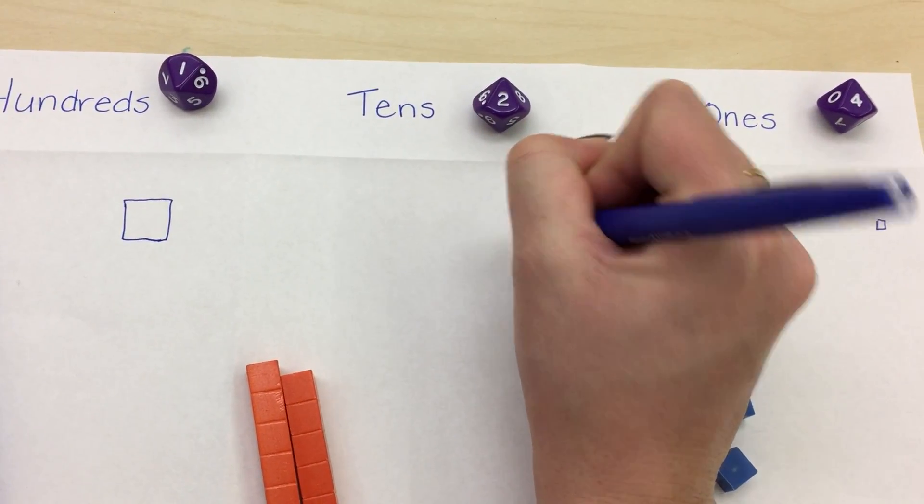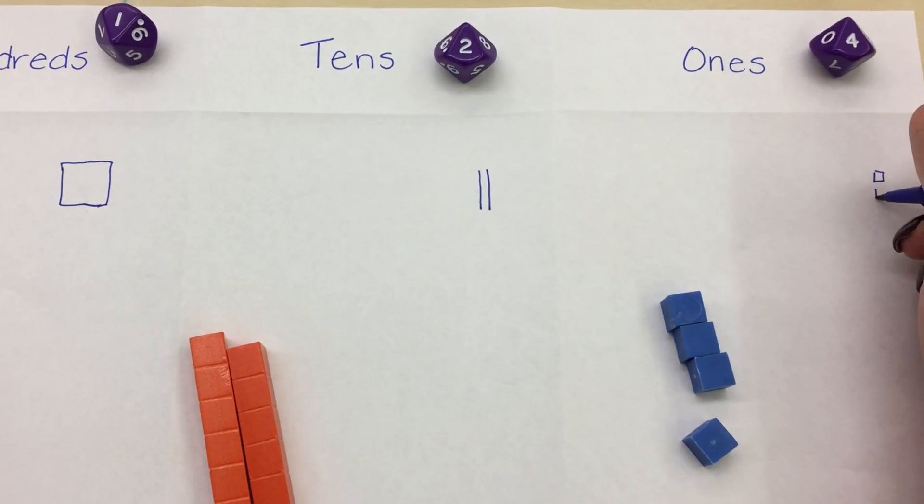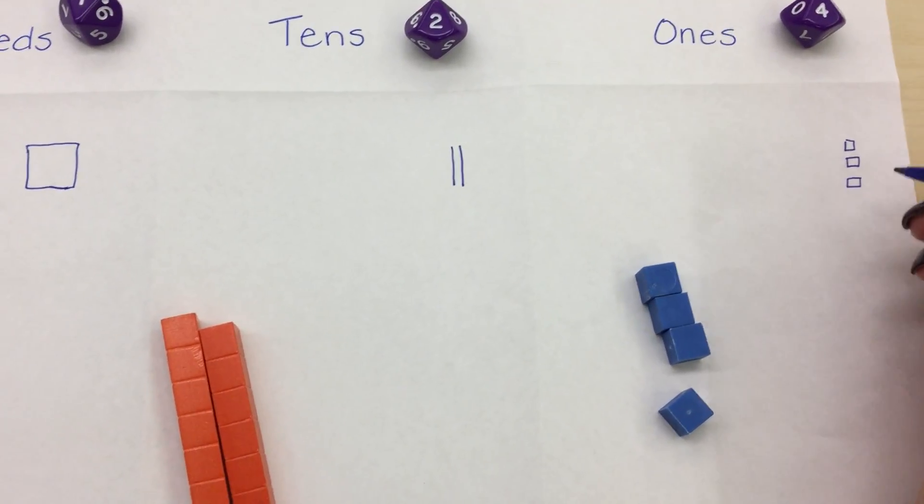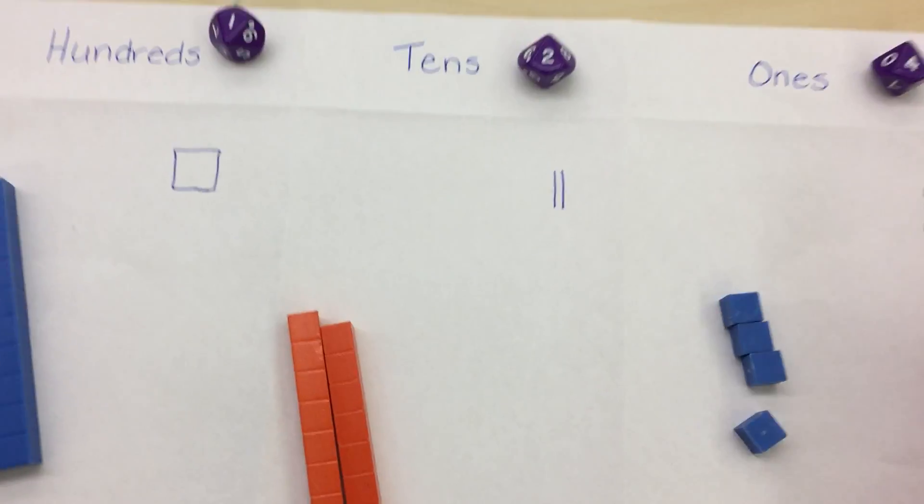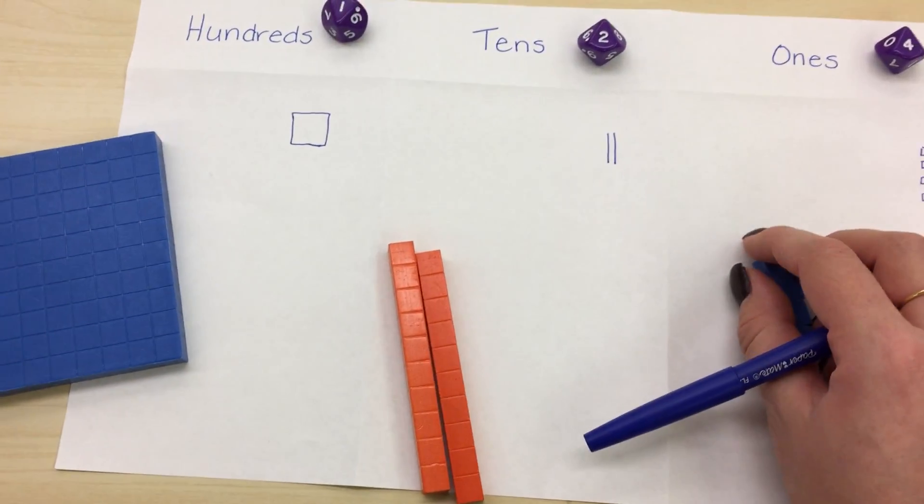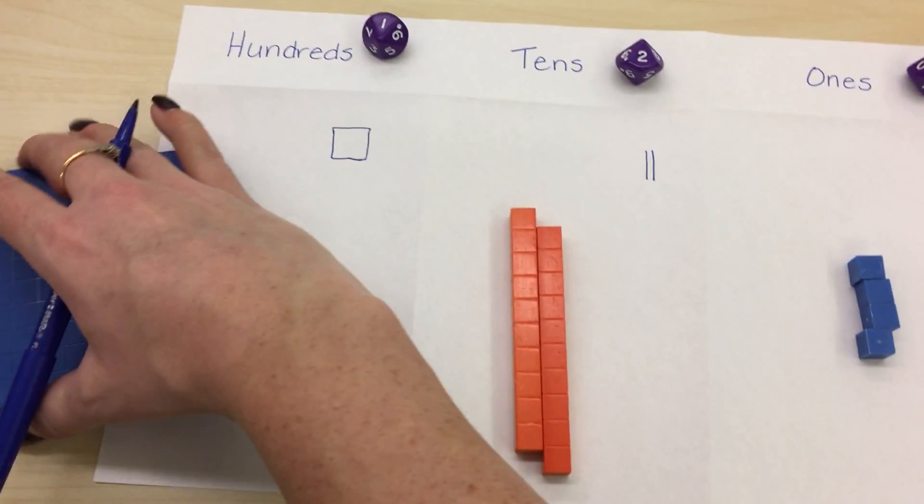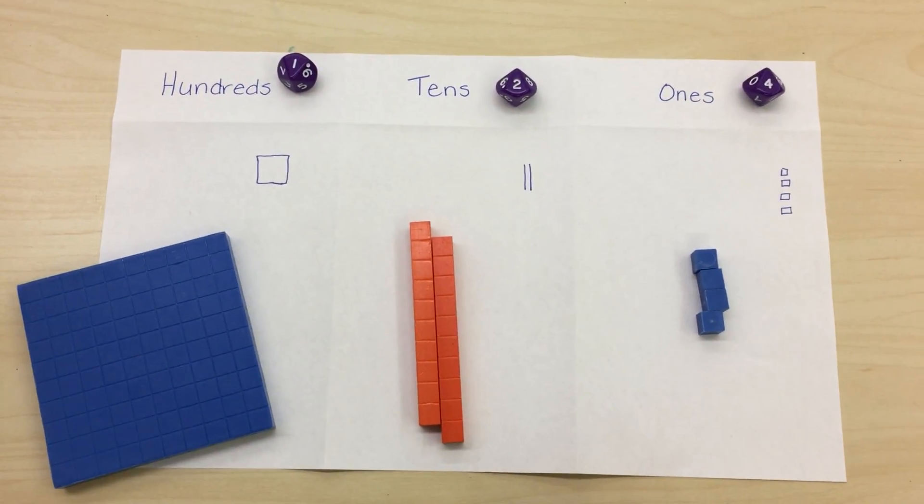So I'm going to add my two rods and four units. So now I can see that I have my manipulatives as well as my picture to show me.